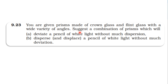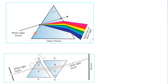A combination of crown glass prism and flint glass prism is selected. Every prism produces both dispersion and deviation. When we combine prisms of the same material and same angle, both deviation and dispersion are eliminated. But if we use prisms of different materials, we can eliminate one while retaining the other.